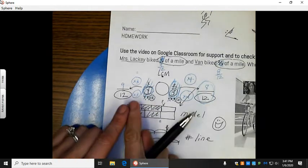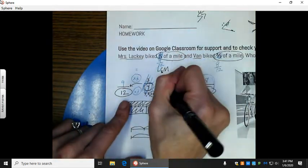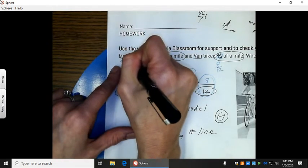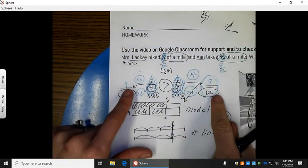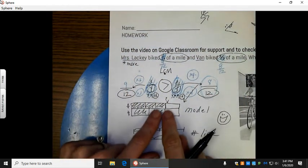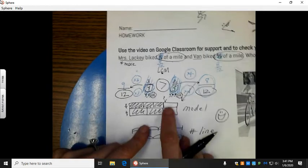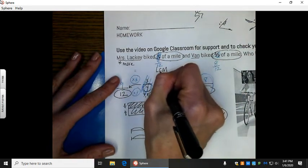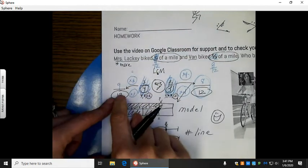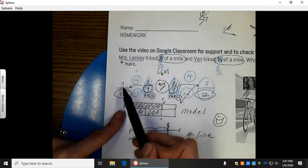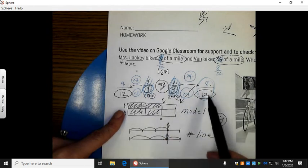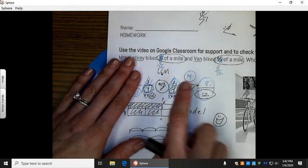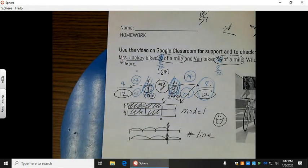Eight-twelfths and nine-twelfths, which one's bigger? Nine-twelfths is bigger. So, Mrs. Lackey biked more. But, can you see that they're very similar? And that's why our model and number line showed a lot of similarity. So, nine-twelfths, we say the crocodile eats the bigger number. If I read this as a number sentence, nine-twelfths is greater than eight-twelfths. Or, read it with your original numbers. Three-fourths is greater than two-thirds. I will see you tomorrow. Good job with your homework.